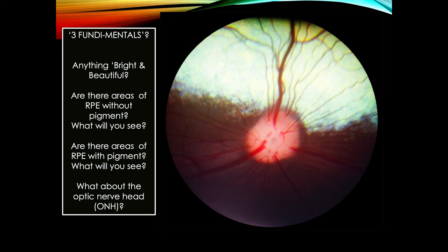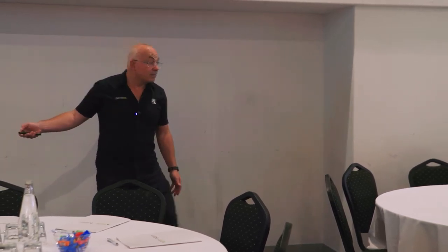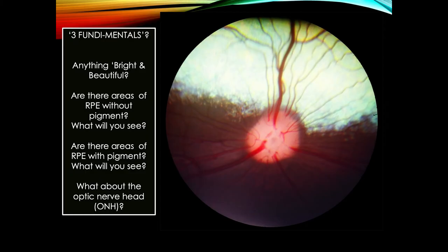Are there areas of RPE with pigment? Yes — you can see the non-tapetal fundus. Dead easy. Optic nerve head — can you see additional myelin? There is the roughly oval optic nerve head. No additional myelin — that optic nerve head doesn't have extra myelin associated with it. Dead easy.